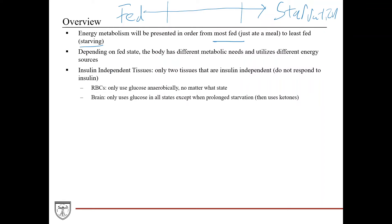We'll talk a lot about insulin. Some insulin-independent tissues don't respond to or require insulin. One of those is RBCs, because they use glucose anaerobically no matter what state they're in — partially because they don't have any mitochondria, so they can't carry out the electron transport chain. The brain only uses glucose in all states except for very prolonged starvation, when it switches over to using ketone bodies.